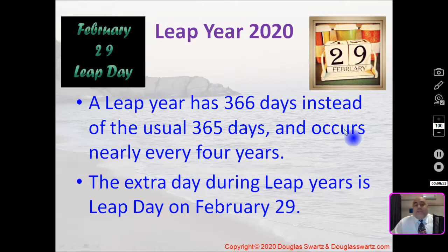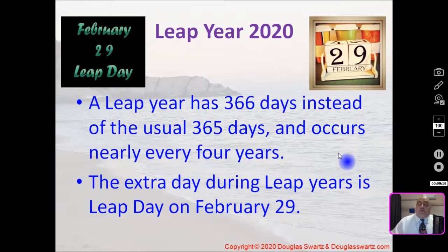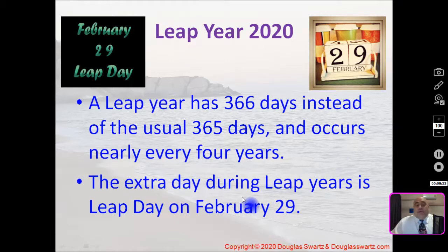A leap year has 366 days instead of the usual 365 days and occurs nearly every four years. The extra day during a leap year is leap day on February 29.